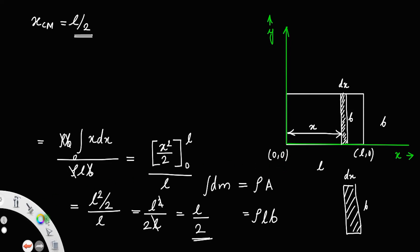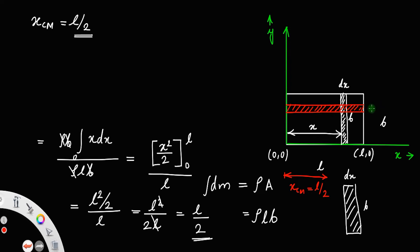Marking that in the diagram, the center of mass is at the exact middle of its length. Now, in a similar way, we need to find y_cm, the y coordinate of the center of mass. For that, we take a horizontal strip like this. Here also we take a rectangular strip. In this case, the thickness is dy and the distance from the x axis is equal to y.